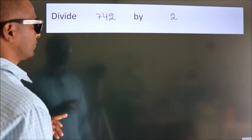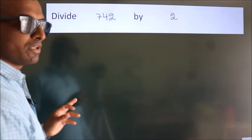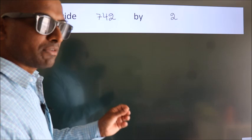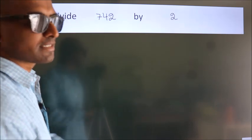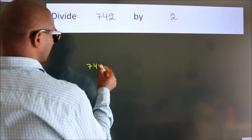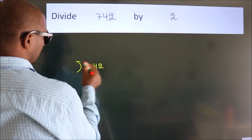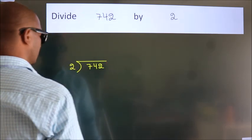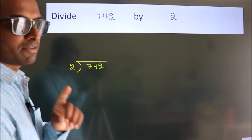Divide 742 by 2. To do this division, we should frame it in this way. 742 here, 2 here. This is your step 1.